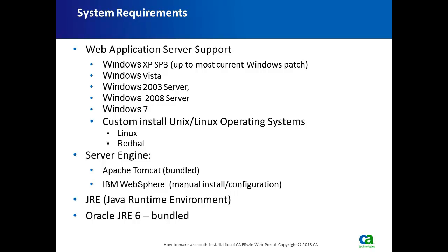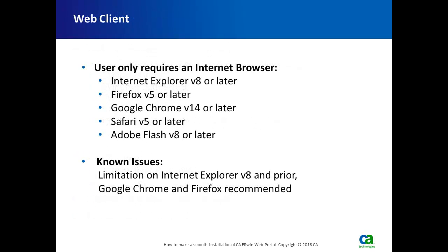CAA Erwin Web Portal can also be installed on a non-Windows operating system but requires some custom installation. The installation includes a Tomcat bundled web server and the JRE. CAA Erwin Web Portal only requires an internet browser, which can be IE version 8 or later, Firefox, Google Chrome, Safari, and Adobe Flash version 8 or later. Note that there are some limitations on Internet Explorer version 8; we strongly recommend Google Chrome and Firefox as a browser.